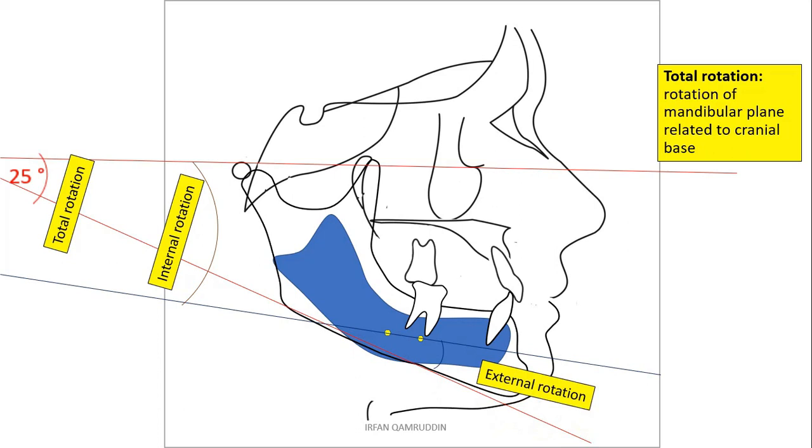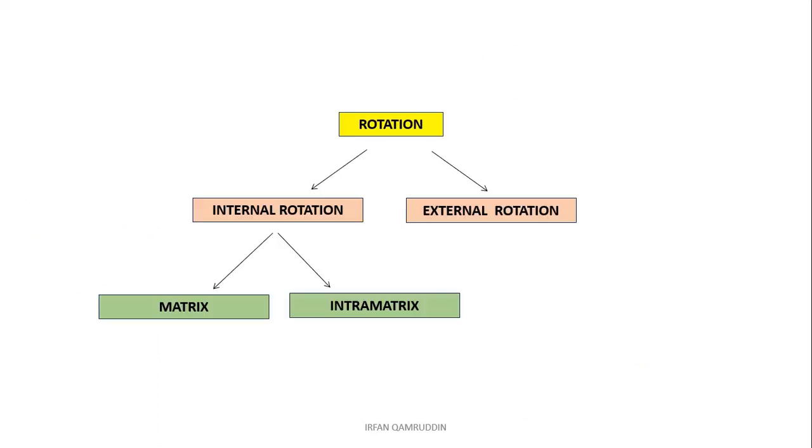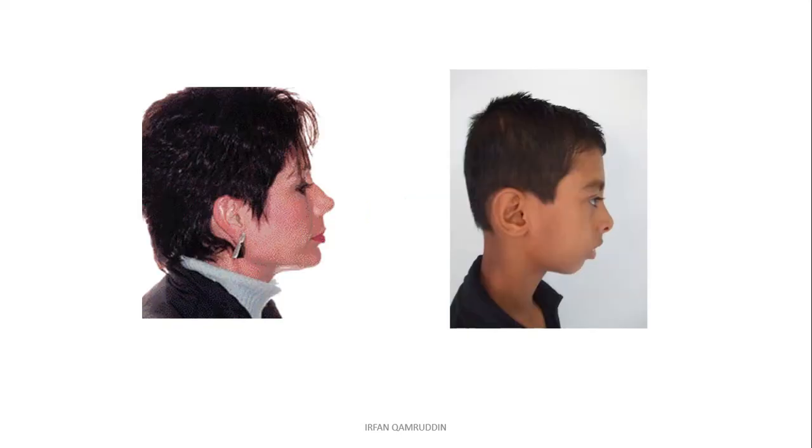In this way you will get to know how much external compensation was there in your patient. So this is the summary: rotations of mandible are of two types, internal rotation and external rotation. Internal rotation has two components, matrix and intramatrix.